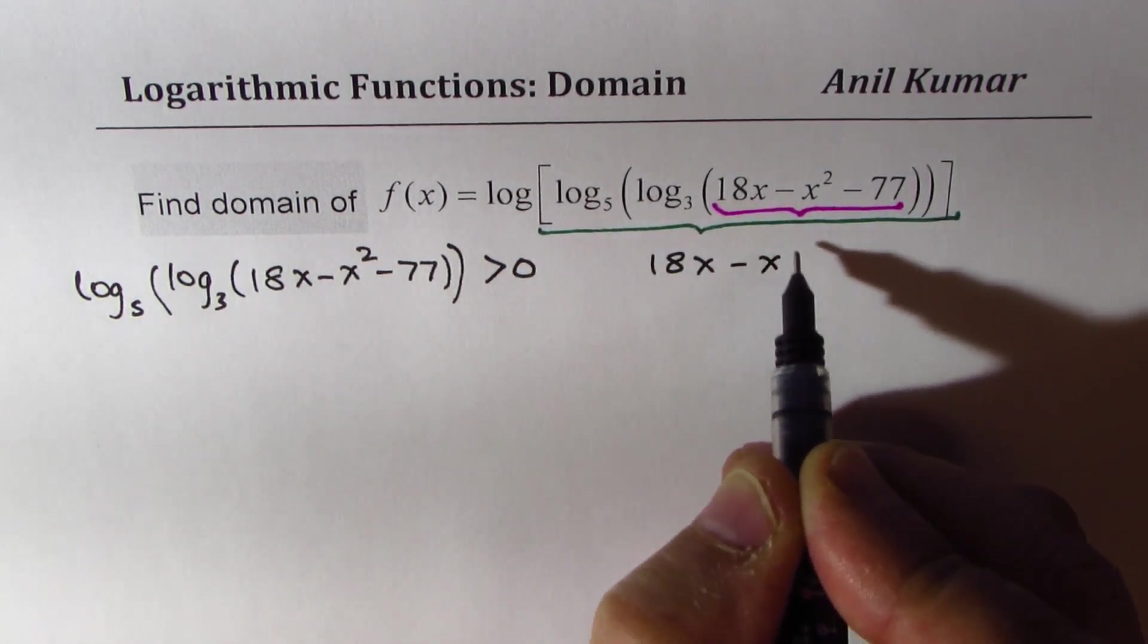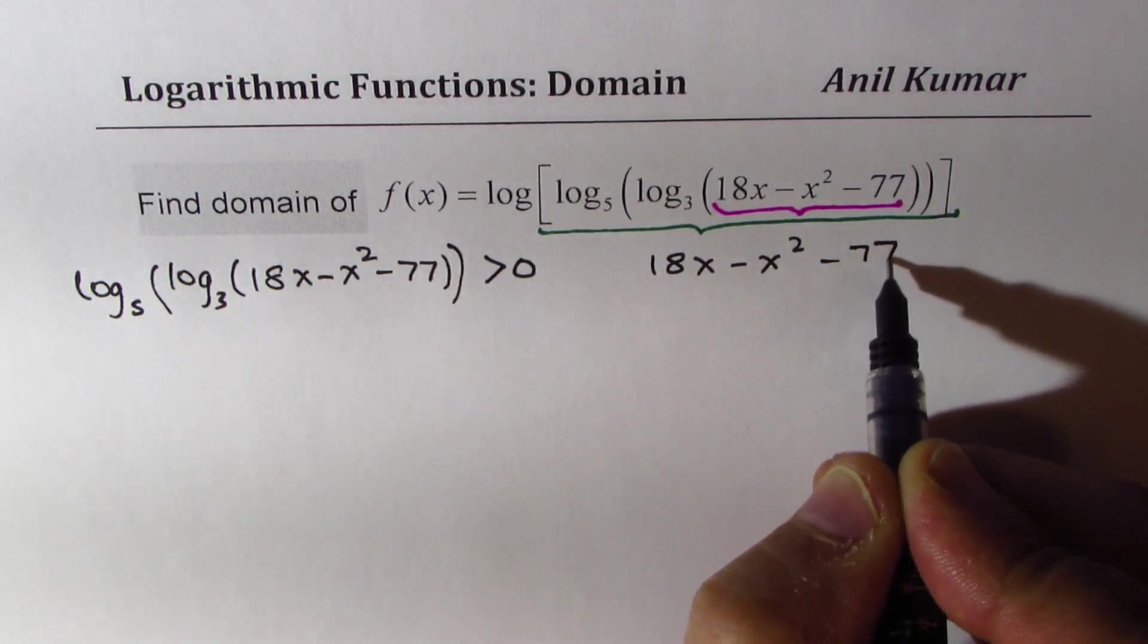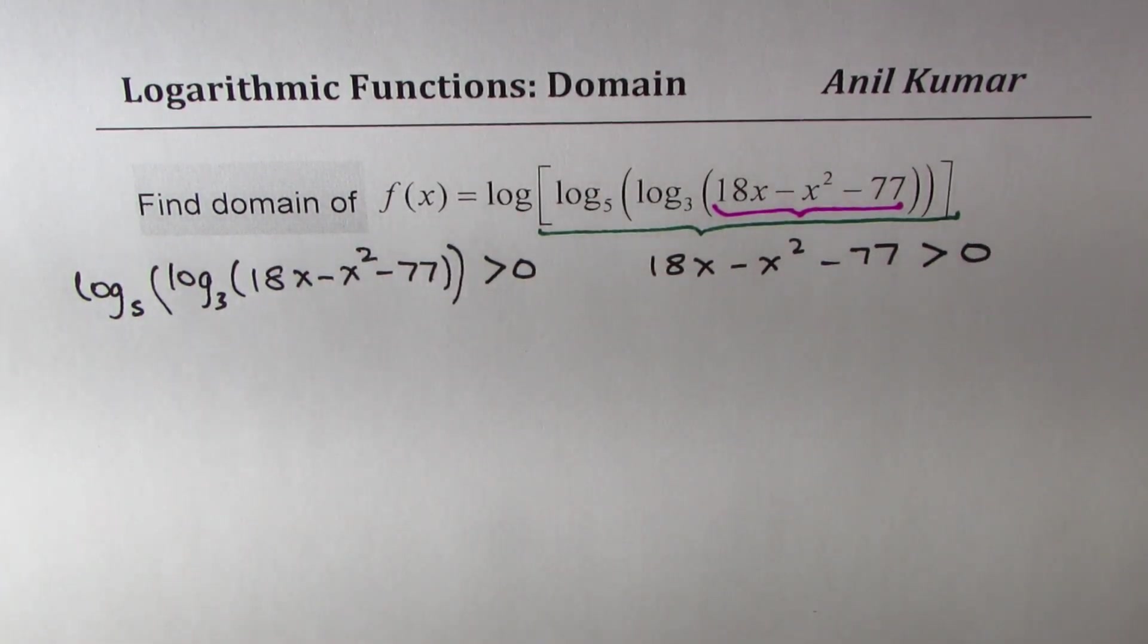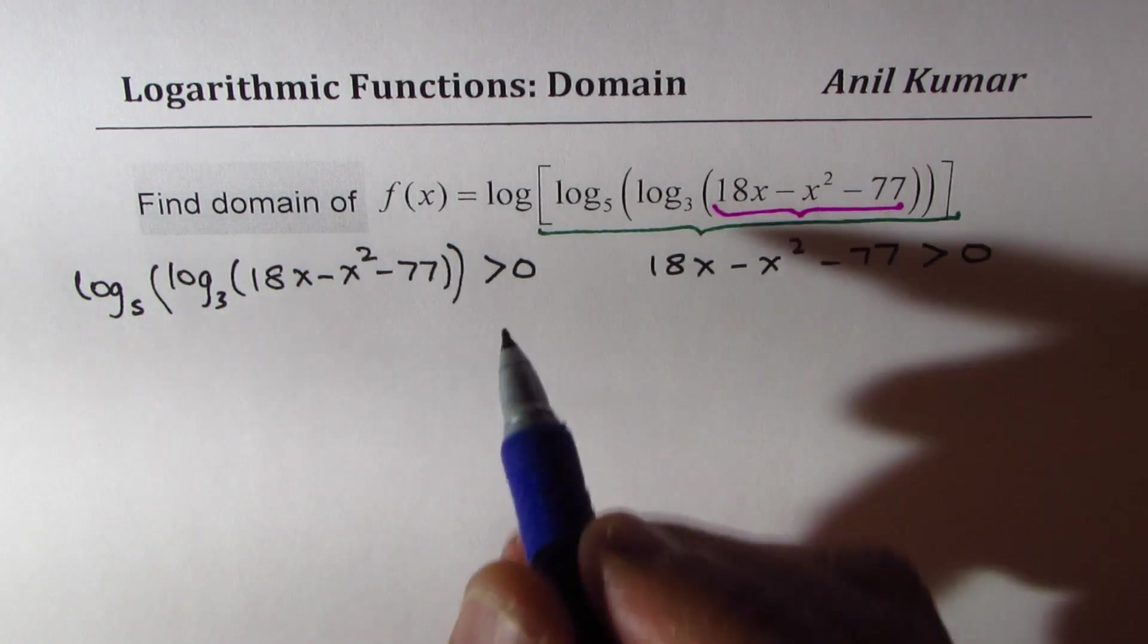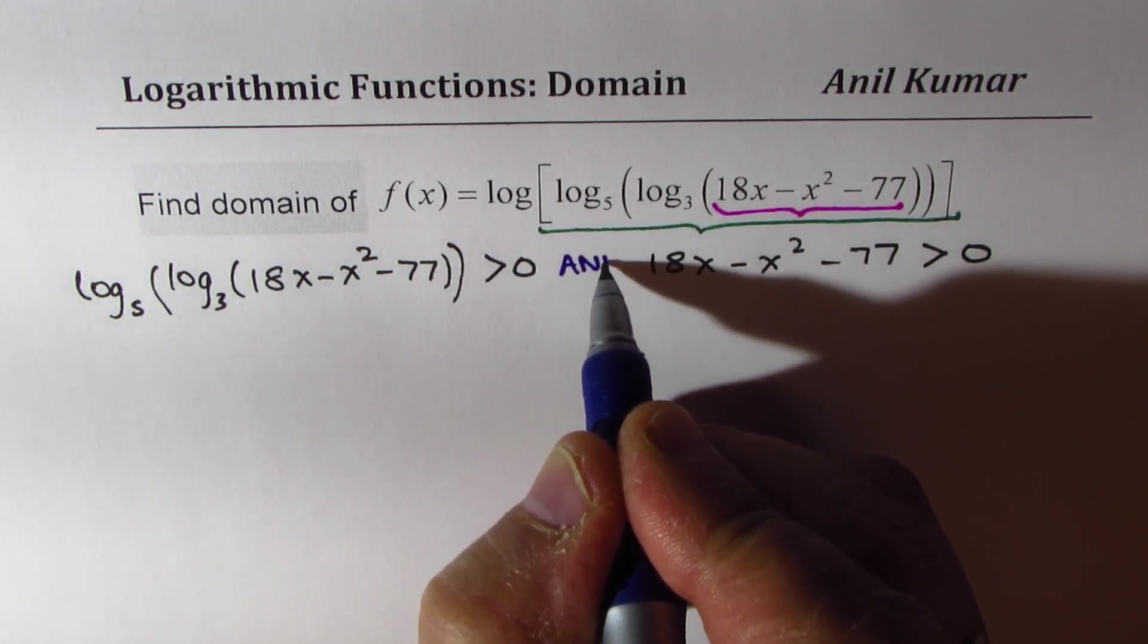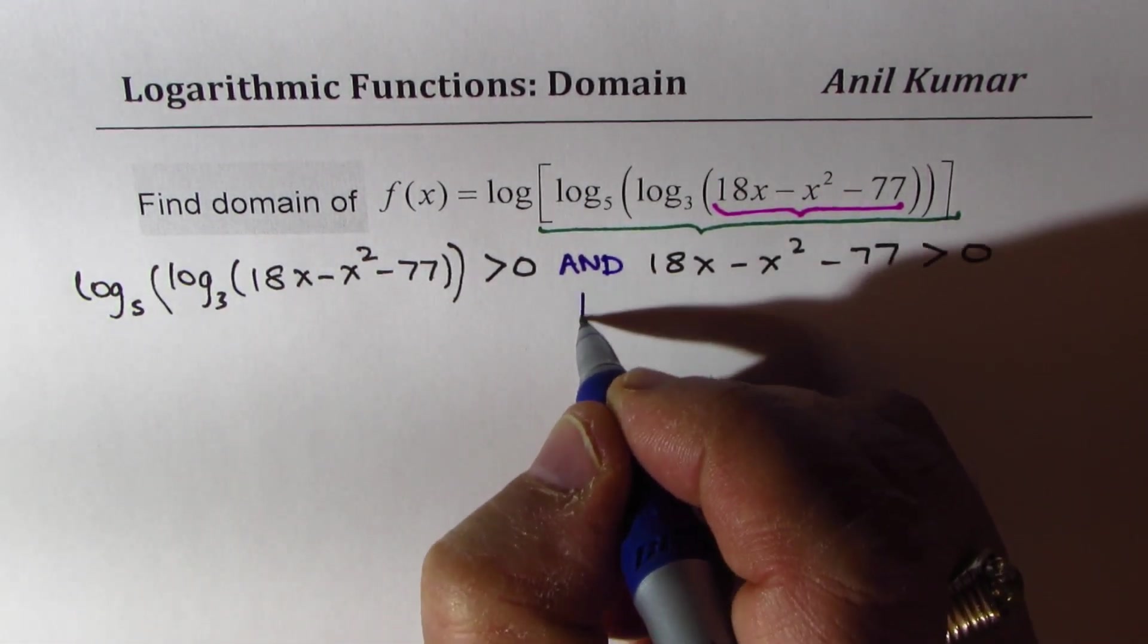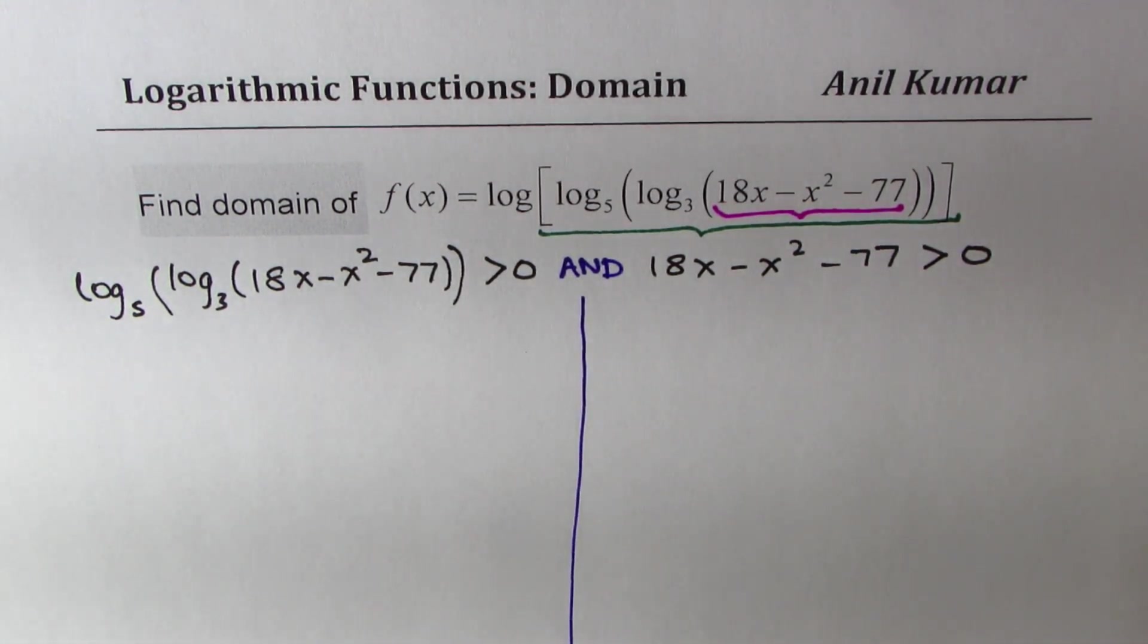So we have 18x - x² - 77 should also be greater than 0. We have two different conditions to work with, and the operation should be AND. Both conditions should be satisfied. We are basically trying to solve these two inequalities. I hope the steps are absolutely clear, so you can pause the video, make an attempt, and then look into my suggestions.